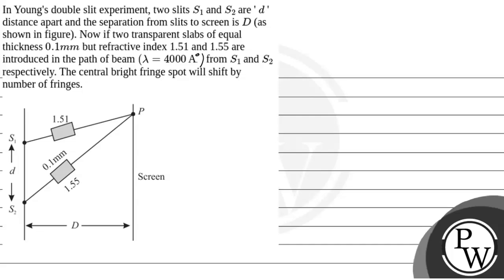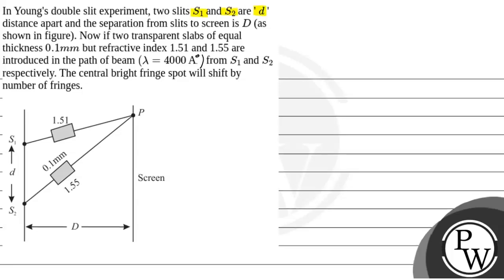Let's see the question. In a Young's double slit experiment, two slits H1 and H2 are some distance apart and the separation from the slits to the screen is capital D. If two transparent slabs of equal thickness 0.1 mm but refractive index 1.51 and 1.55 are introduced in the path of the beam from H1 and H2 respectively, the central white fringe spot will shift by how many fringes.